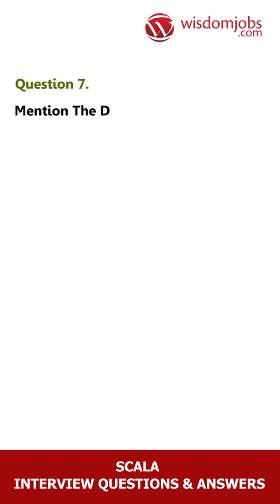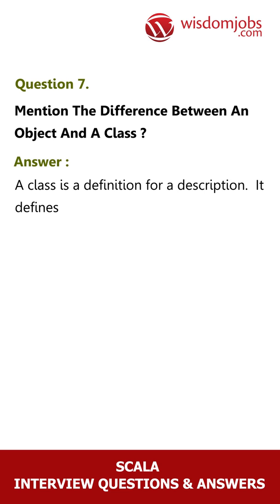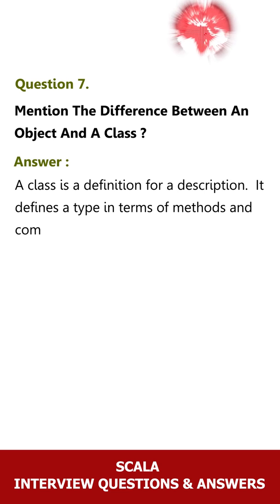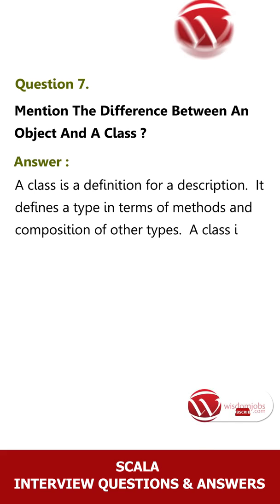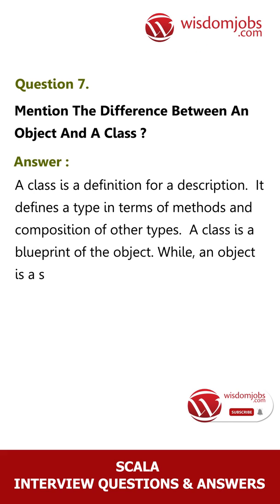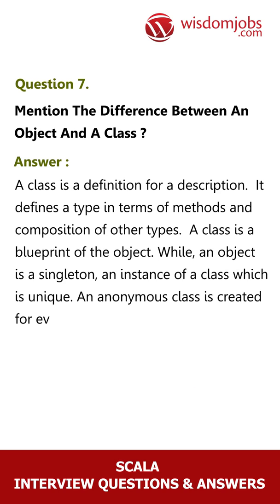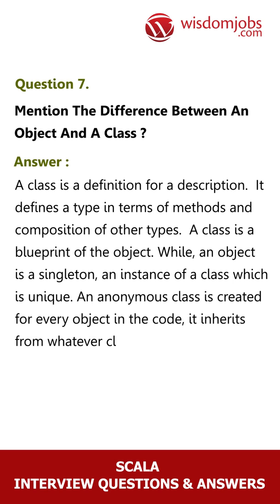Question 7: Mention the difference between an object and a class. Answer: A class is a definition or description — it defines a type in terms of methods and composition of other types. A class is a blueprint of the object. While an object is a singleton, an instance of a class which is unique. An anonymous class is created for every object in the code, and it inherits from whatever classes you declared the object to implement.